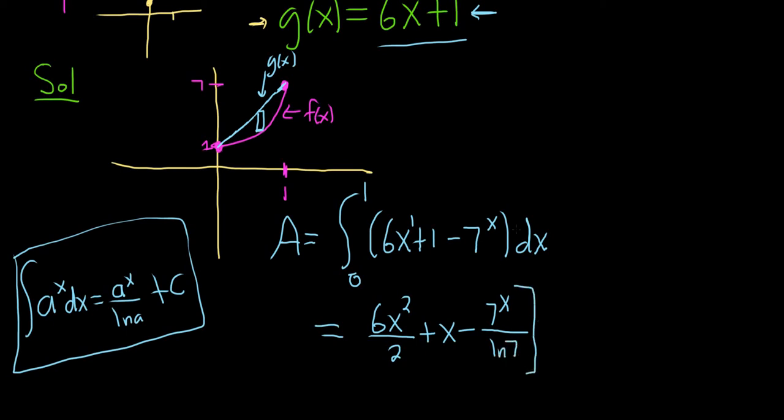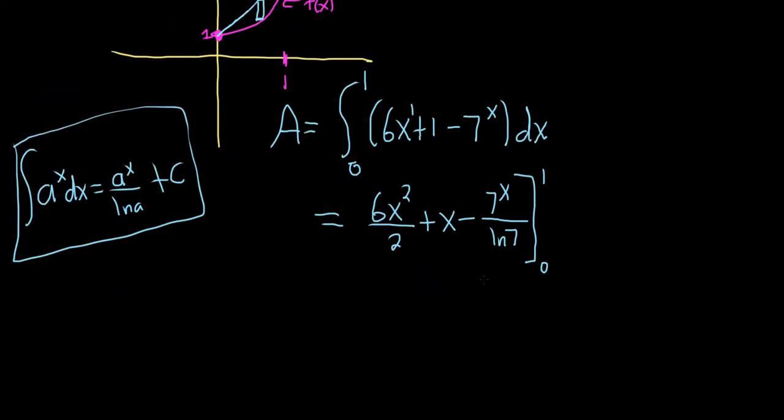All right, we have a bracket here, and we're going from 0 to 1. We plug in the 1 first, subtract, then plug in the 0. Good stuff. This is really 3, so I'm just going to put a 3 there. So plugging in 1, we get 3 times 1 squared plus 1 minus 7 to the 1 over ln 7, natural log of 7.